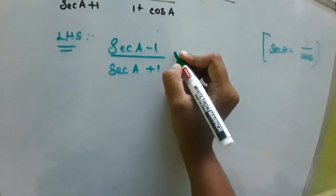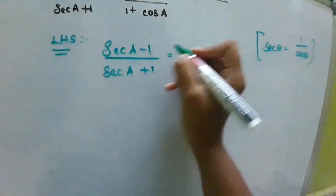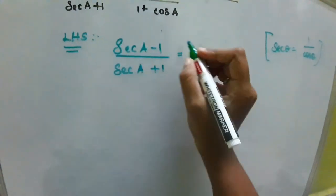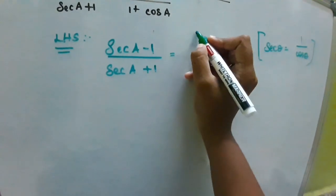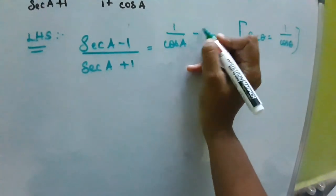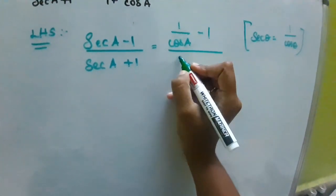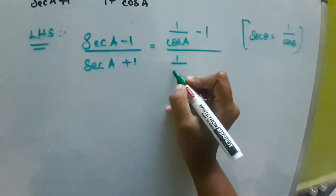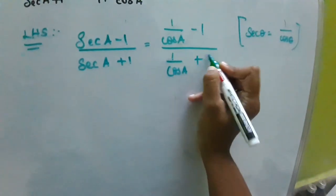Instead of sec theta, we are going to substitute 1 by cos. Here, instead of theta, that is A. So, sec A equals 1 by cos A minus 1 divided by 1 by cos A plus 1.